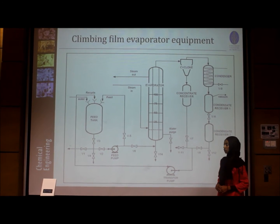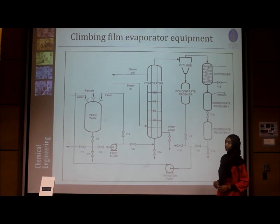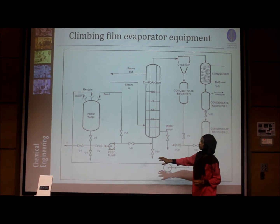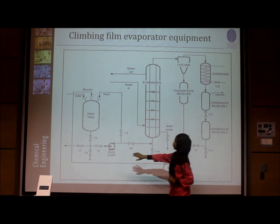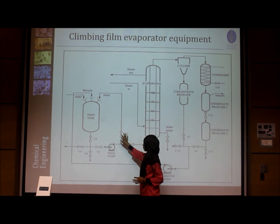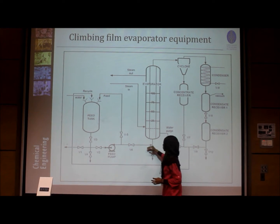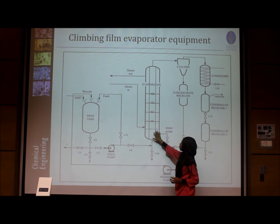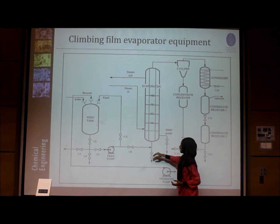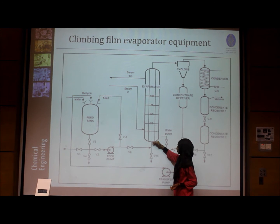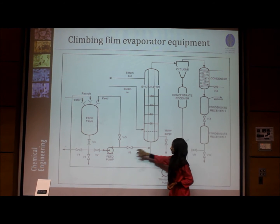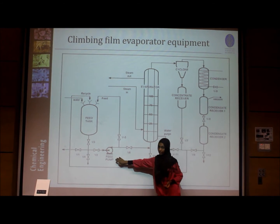This is the climbing film evaporator equipment. First, we have the feed tank where the feed comes from and goes directly to the evaporator. The liquid will enter from the bottom and go upwards because of the pump.